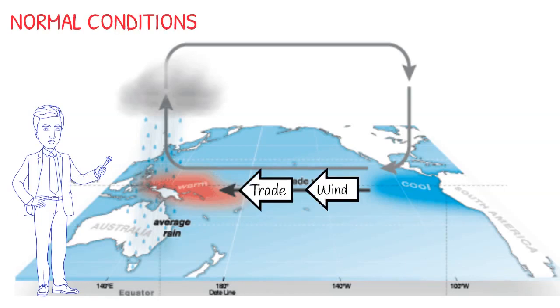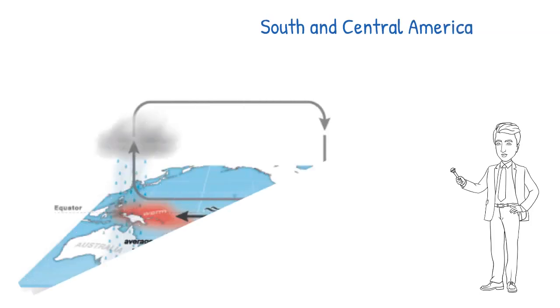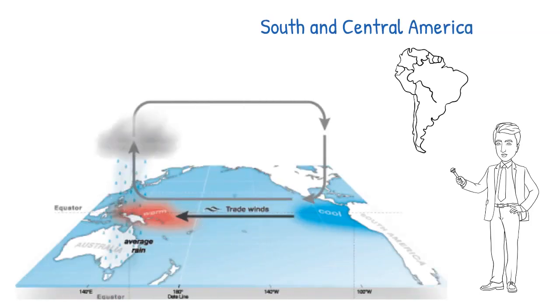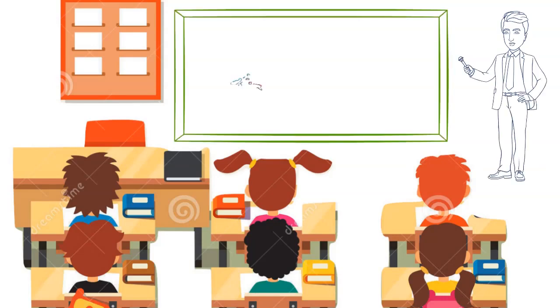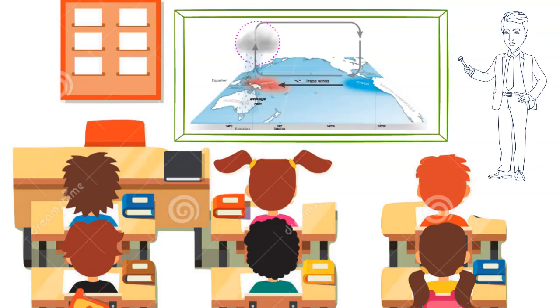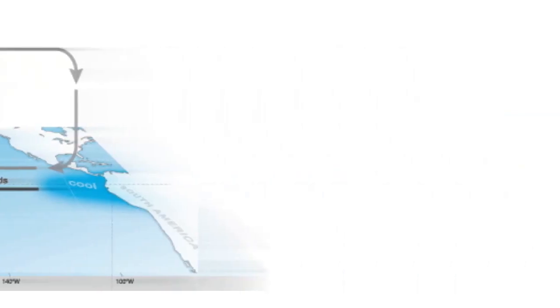Under normal conditions, trade winds flow from east to west, pushing warm water towards Asia and Australia. The warm waters pushed away from South and Central America are replaced by cooler water from the deeper part of the ocean in a process called upwelling. These warm waters in the western Pacific pump heat to the air, causing it to rise with more strength. Thick clouds form as the water vapor in the air gets cold and changes back into water in a process called condensation.